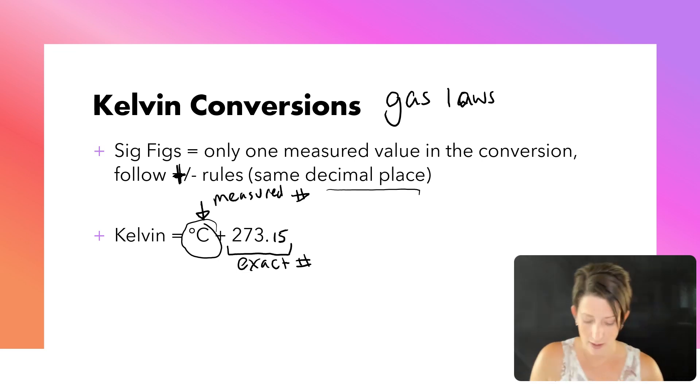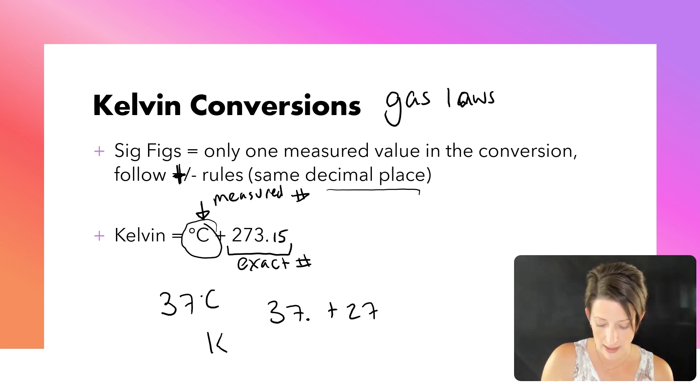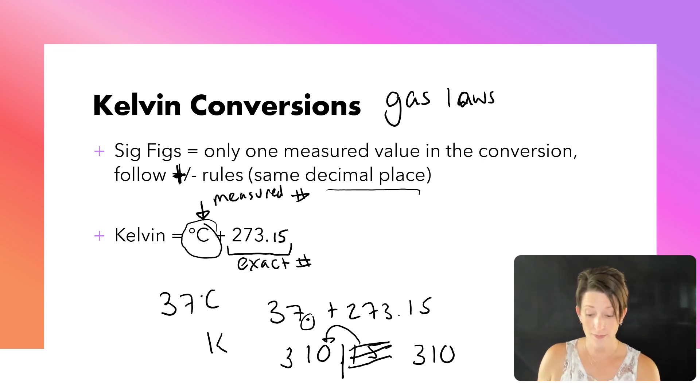So if we have 37 degrees Celsius, what is it in Kelvin? We'll take 37, I'm going to put a decimal there just so I know it's present, plus 273.15. When we add those together, we get 310.15. Addition-subtraction rules. Ignore the decimal places because we only have one's place occupied and the one does not affect that zero. So we have 310.